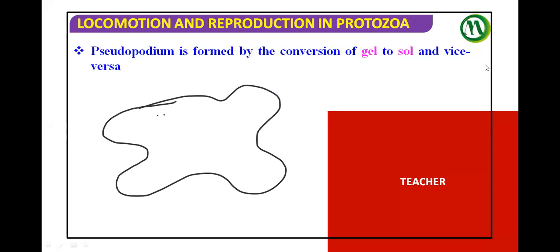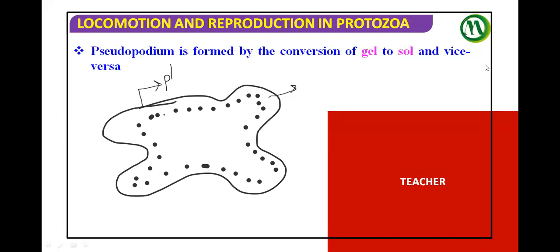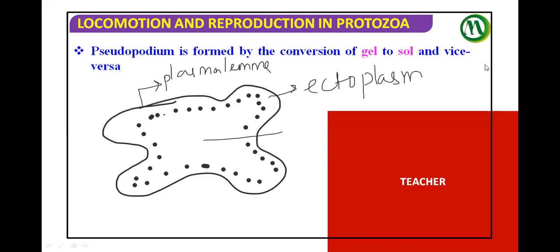Here I am putting some differentiation of ectoplasm and endoplasm. Just below the plasma lemma — the plasma lemma is the cell membrane — whatever is present is called ectoplasm, and inside that is said to be endoplasm.